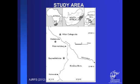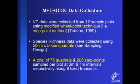For methods, veld condition data were collected from the 12 sample plots using the modified wheel point technique, and species richness data were collected using 50 by 50 centimeter quadrats. A total of 25 quadrats were sampled per plot at three-meter intervals for species richness, as well as 200 step points sampled per plot at one-meter intervals for veld condition.